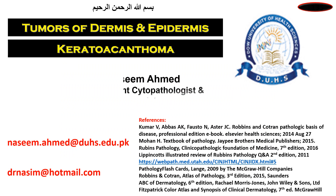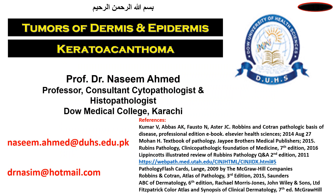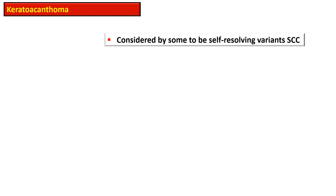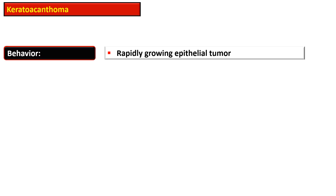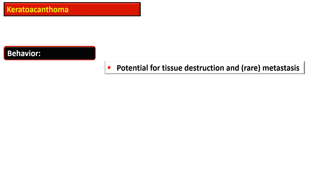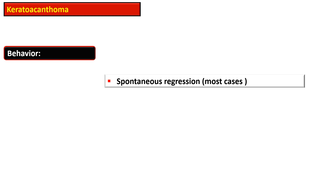This video is about keratoacanthoma, a special variant of squamous cell carcinoma. Keratoacanthoma was formerly considered a pseudo-cancer, but now it is considered a self-resolving variant of squamous cell carcinoma. It is a rapidly growing epithelial tumor that has potential for local tissue destruction and rarely to metastasize. There is spontaneous regression in most cases.